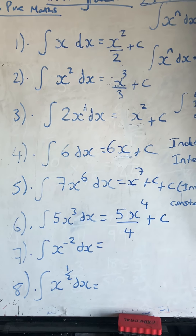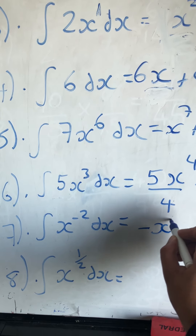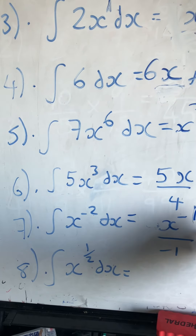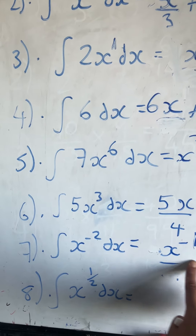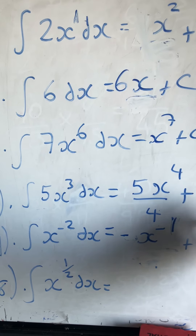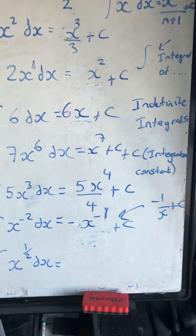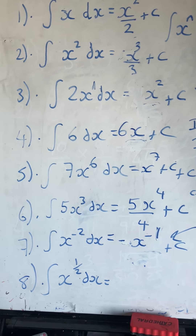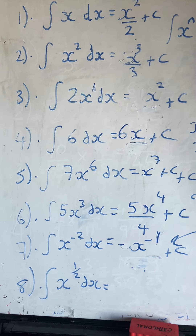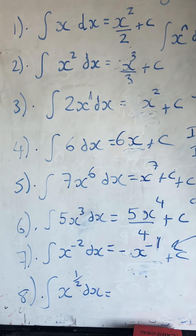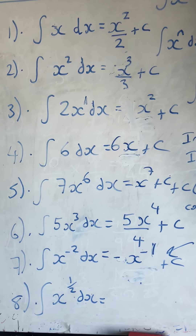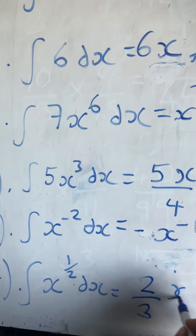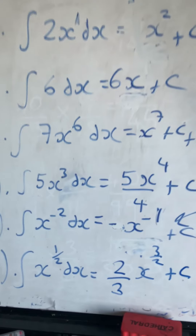Question 7 is a bit trickier: the integral of x to the minus 2 dx gives x to the minus 1, divided by minus 1, plus c. Dividing by minus 1 makes the answer negative, so I get minus x to the minus 1 plus c, or equivalently minus 1 over x plus c. Question 8: the integral of x to the half dx. Adding 1 to the power gives x to the 3 halves, divided by 3 halves plus c. Dividing by 3 halves is the same as multiplying by 2 thirds, so the answer is 2 thirds x to the 3 halves plus c.